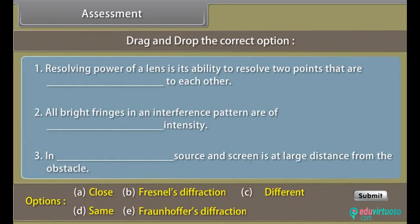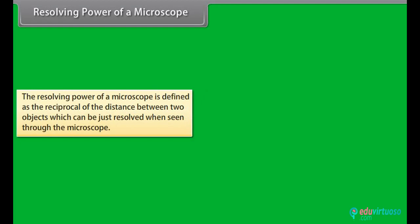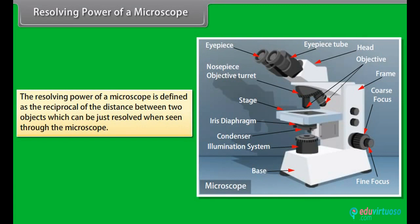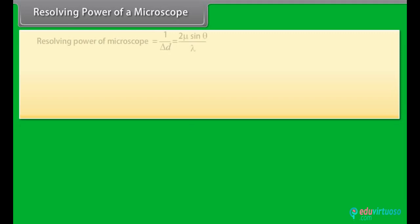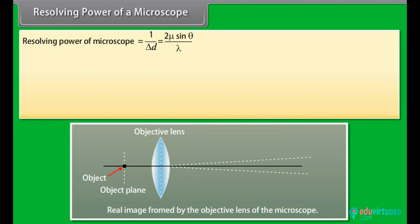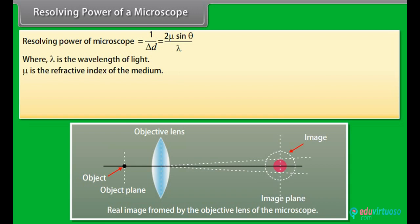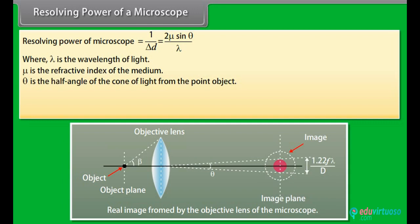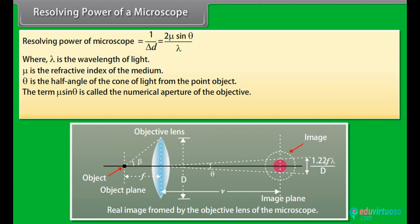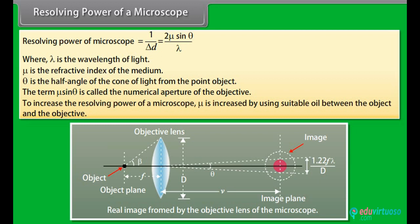The resolving power of a microscope is defined as the reciprocal of the distance between two objects that can just be resolved: 1/δD = 2μ sin θ / λ, where λ is the wavelength of light, μ is the refractive index of the medium, and θ is the half angle of the cone of light from the point object. The term μ sin θ is called the numerical aperture. To increase resolving power, μ is increased by using suitable oil between the object and the objective.